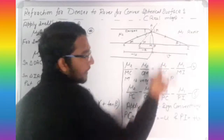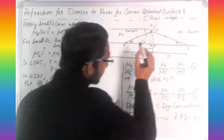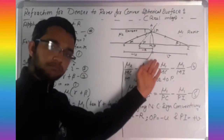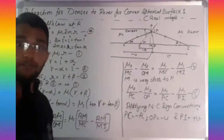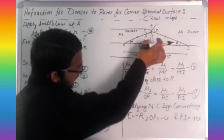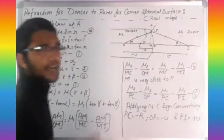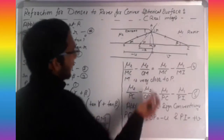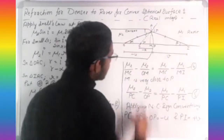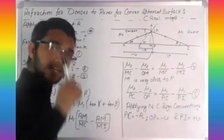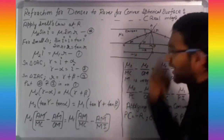Regarding sign conventions: the radius of curvature R can be taken as negative because it is against the direction of the incident ray. This incident ray is not measured in the opposite direction. O to P is the object distance u, and it is also taken as negative because it is measured against the direction of the incident ray.